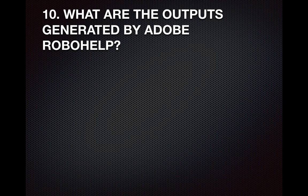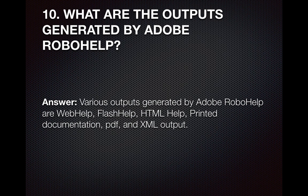Question number ten: What are the outputs generated by Adobe RoboHelp? There are various outputs generated by Adobe RoboHelp. Some of them are Web Help, Flash Help, HTML Help, printed documents, and PDF — that is, Portable Document Format — or XML, which is Extensible Markup Language.